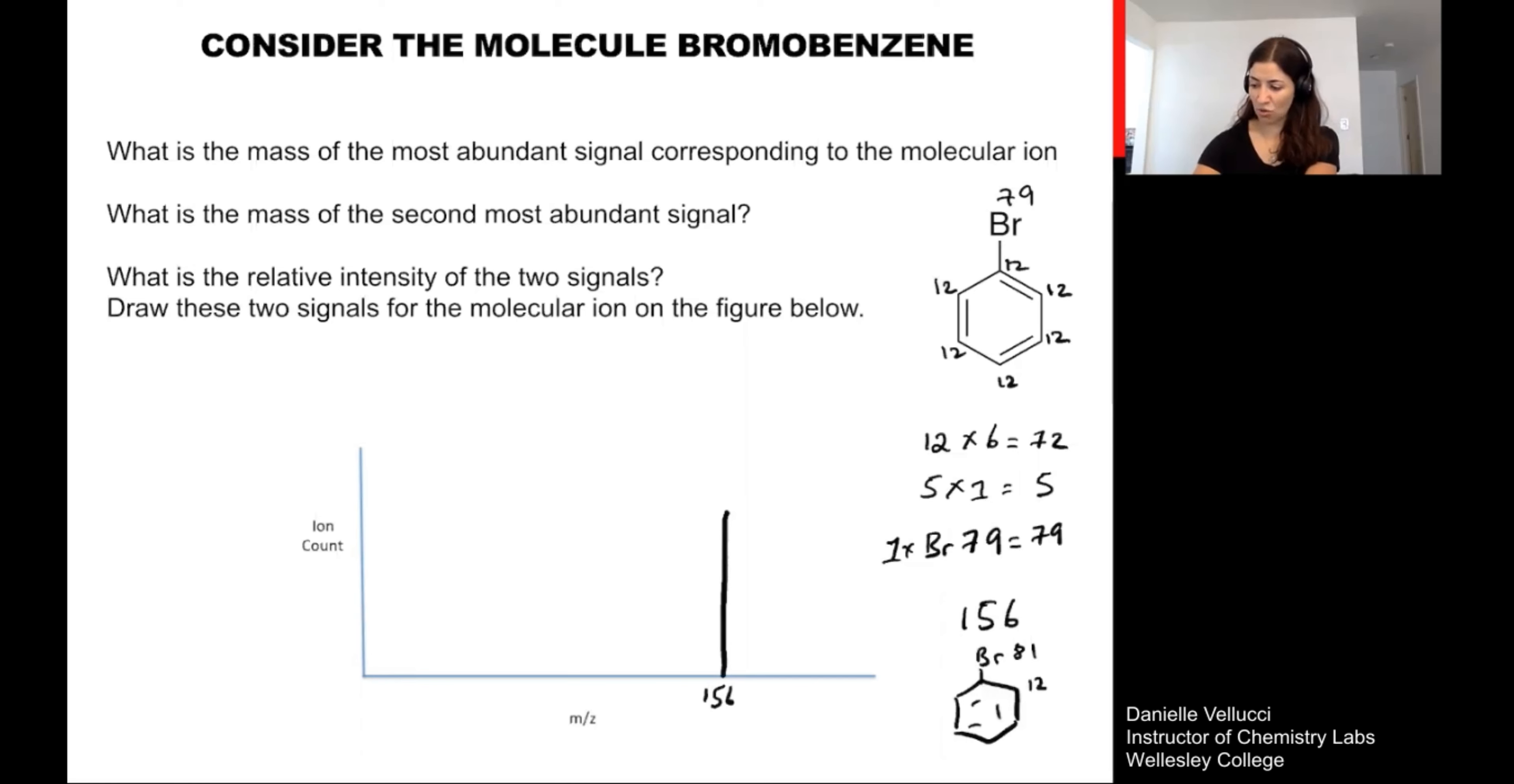And so because that is a highly abundant isotope, we're going to keep all of our carbons at 12. And we're going to recalculate the mass using 81. And we'll see a mass of 158. So if we call this M plus, we'll call this one M plus 2. And because this bromine 81 is highly abundant, we'll see a signal that's almost equal in intensity, maybe slightly shorter to the 156 itself.